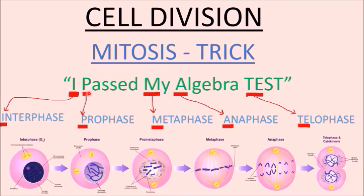M is for Metaphase, A is for Anaphase, and the last one, D, is for Telophase.